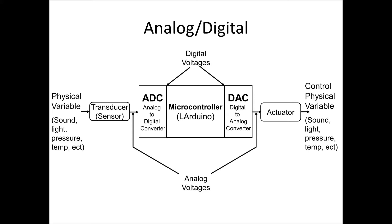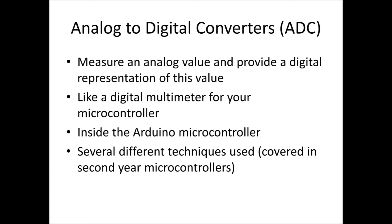Then we need to use something called an analog to digital converter, which will essentially convert this analog voltage into a number — that's what we'll be talking about in detail today. On the flip side, we often want to generate an analog voltage output from our microcontroller. To do that, we use a digital to analog converter, which is discussed in the pulse width modulated video, and this will generally drive some sort of an actuator — for example, a speaker to generate sound, or a light globe that we can dim.